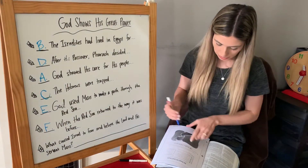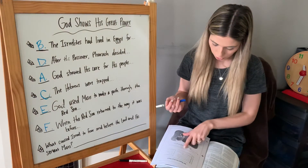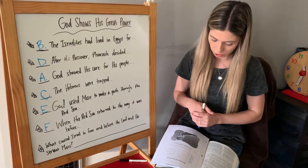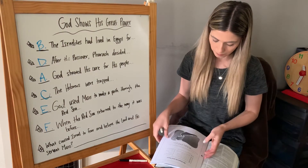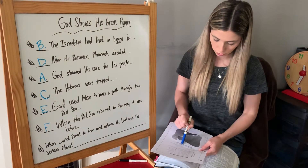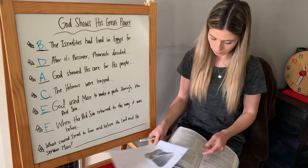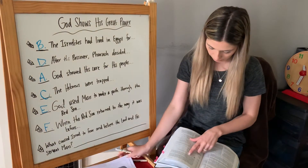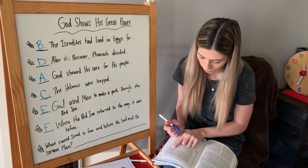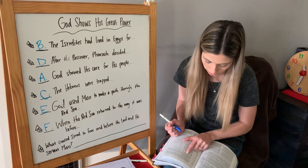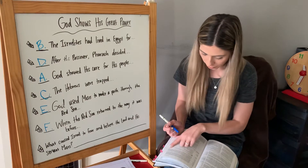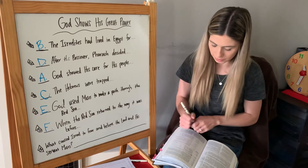Our next section says: Read Exodus 14:31 and answer the question below. This verse reminds us of the great way in which God always took care of his people. Our question is: What caused Israel to fear and believe the Lord and his servant Moses? Let's read Exodus 14:31 — when the people of Israel saw the mighty power that the Lord had unleashed against the Egyptians, they were filled with awe before him. They put their faith in the Lord and in his servant Moses.